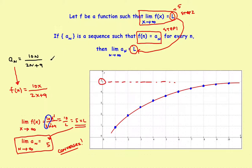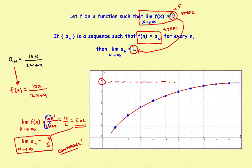One final note: some students argue that you could get the same answer without changing to a function — which is true — but you're trying to be rigorous. Even some textbooks skip the x-substitution step, but you really should include it, as that's why the definition is set up this way. So the three steps are: (1) change the sequence into a function, (2) find the limit of the function, and (3) conclude that the limit of the sequence equals the limit of the function. In the next video, we'll look at some real problems.